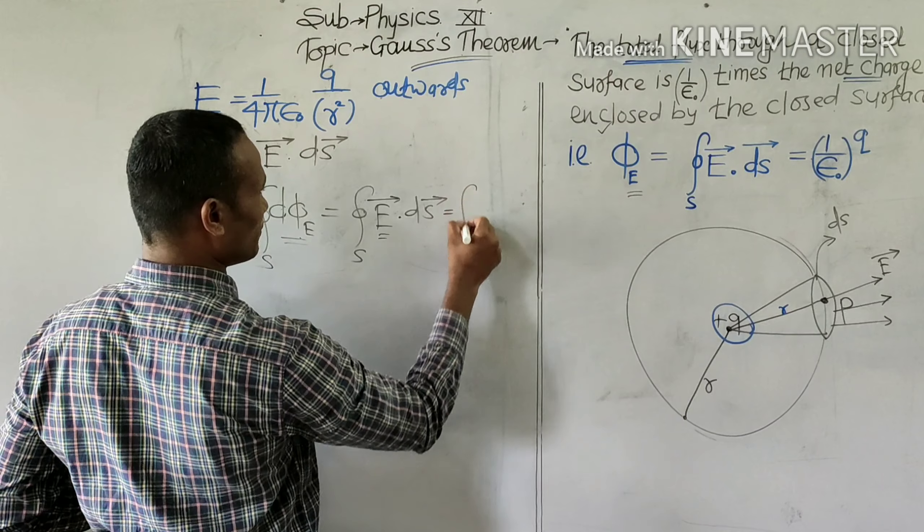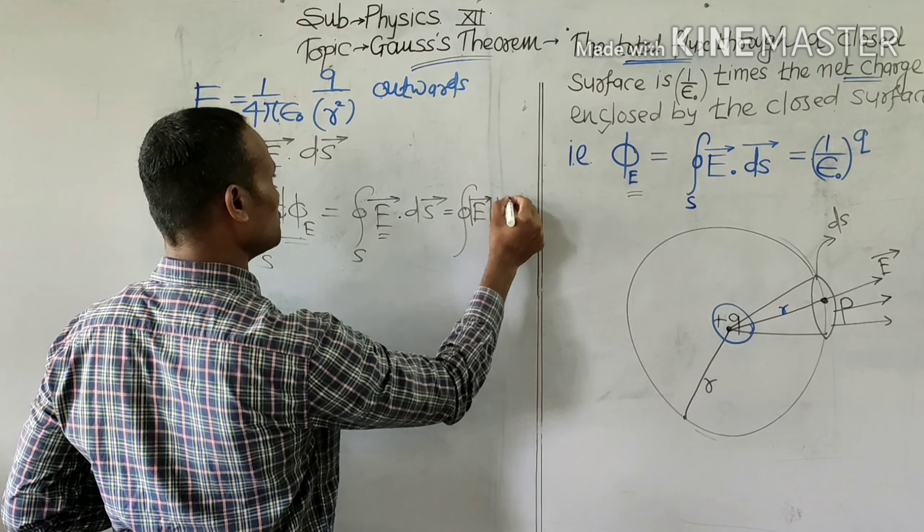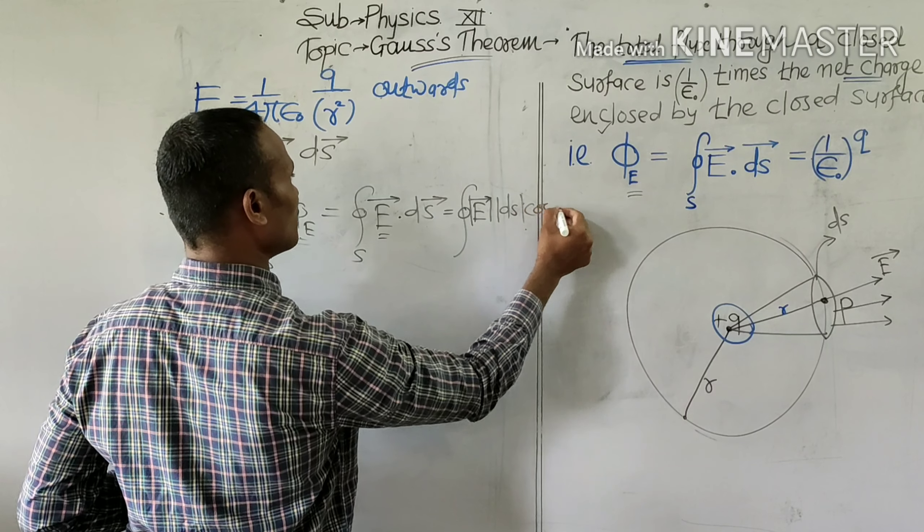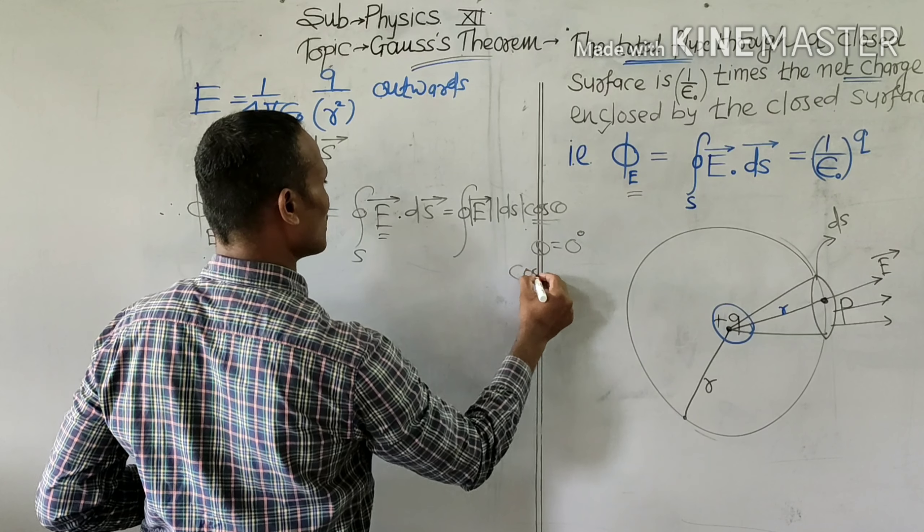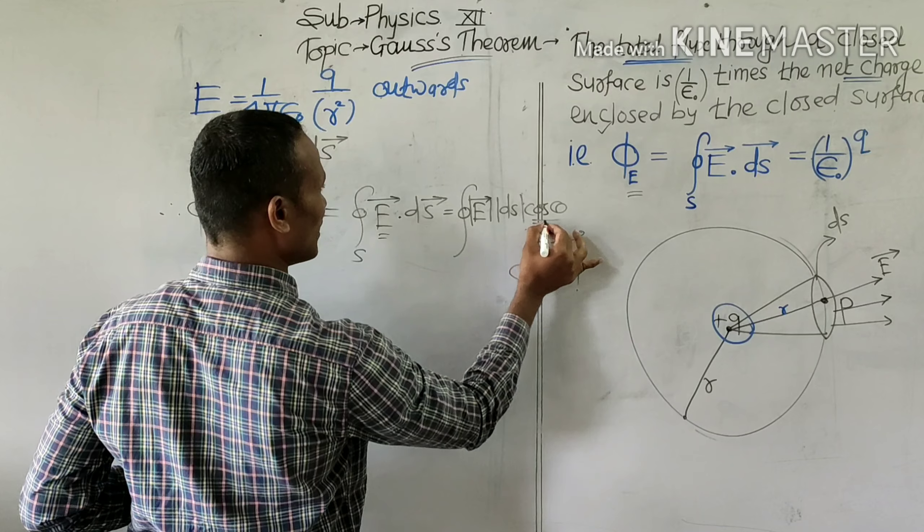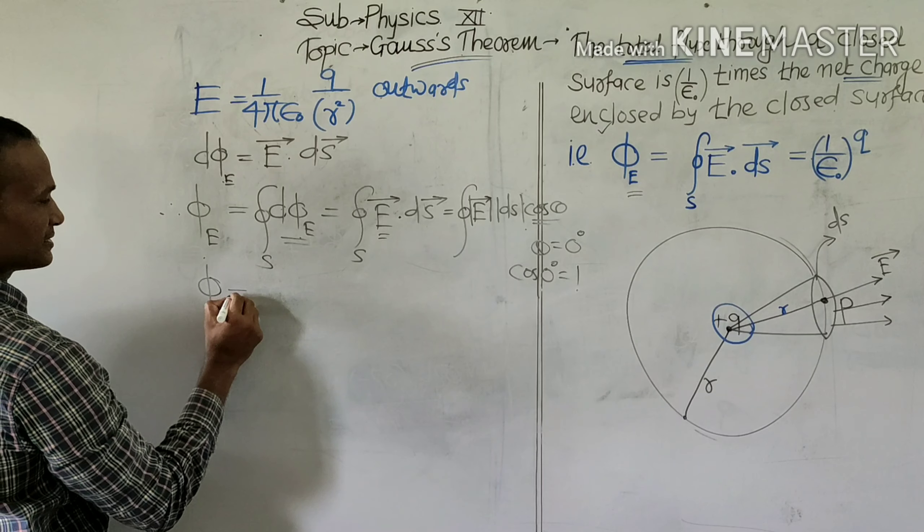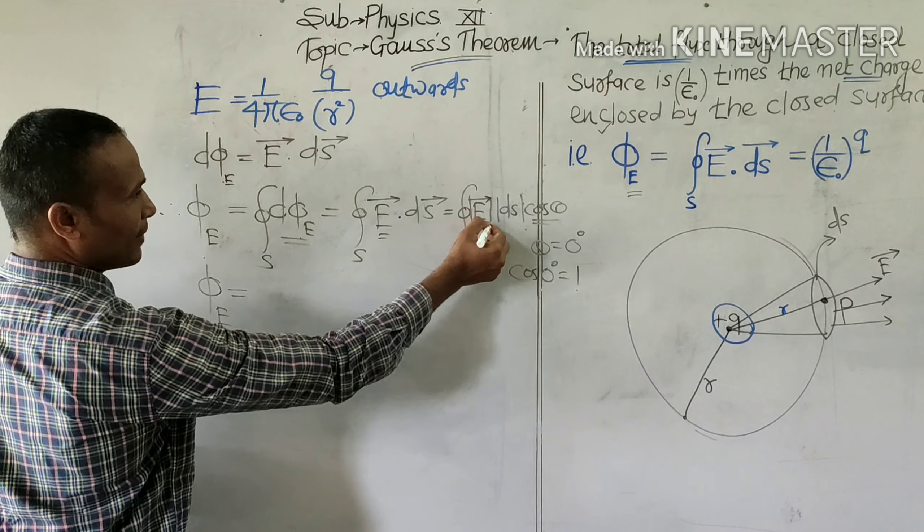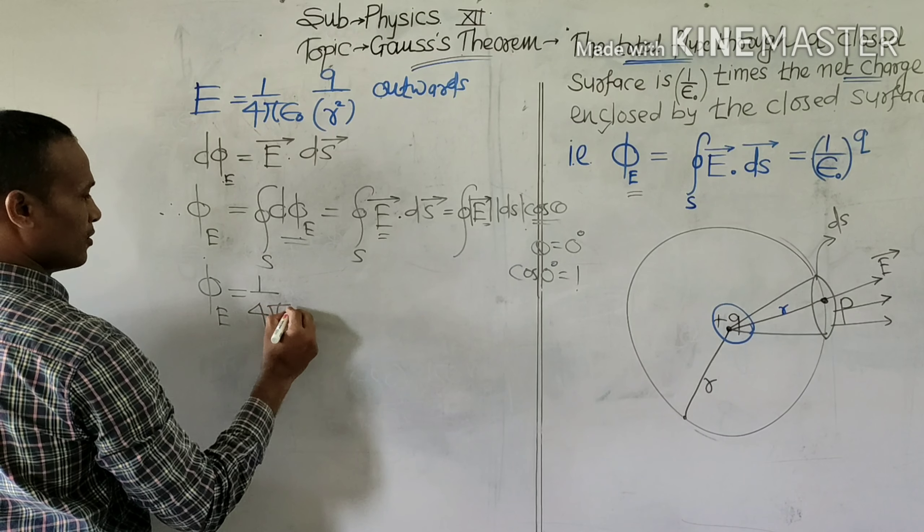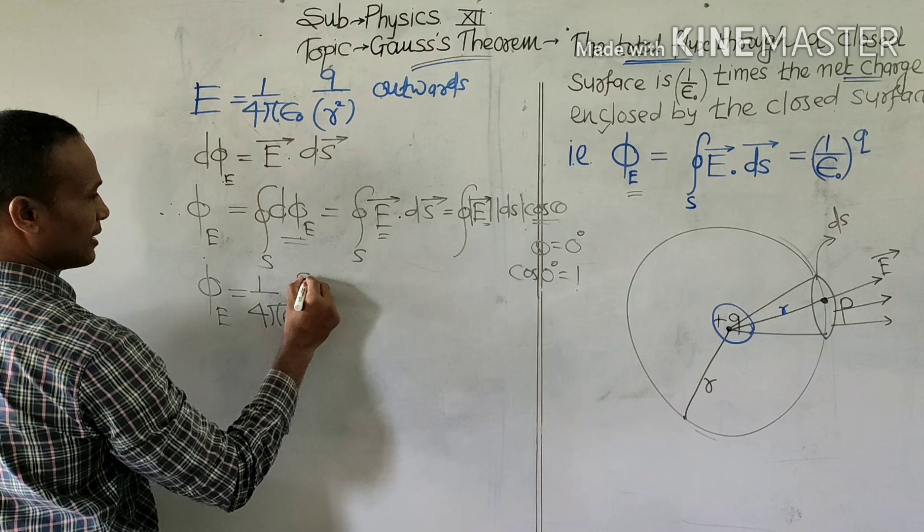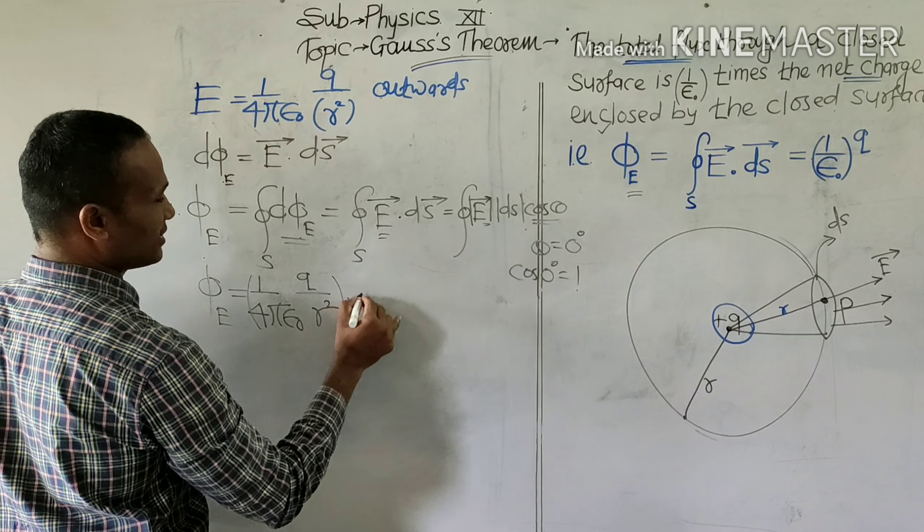E dot dS can also be written as magnitude of E times magnitude of dS times cos theta. Now, being theta 0 degrees, cos of 0 degrees is 1. So we have the net flux through the enclosed surface equals, magnitude of field is 1 upon 4πε₀, that charge upon square of the distance, multiplied by the surface area.